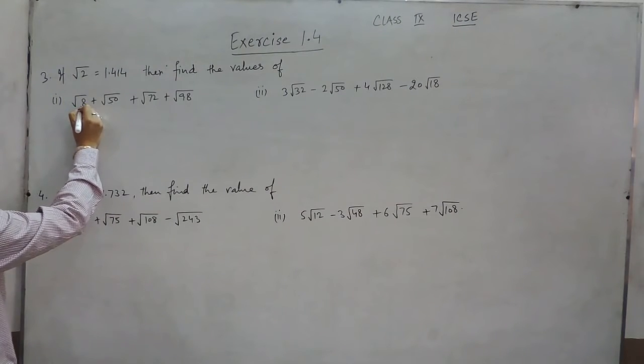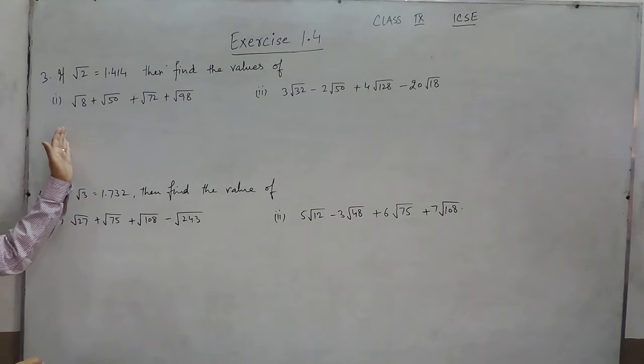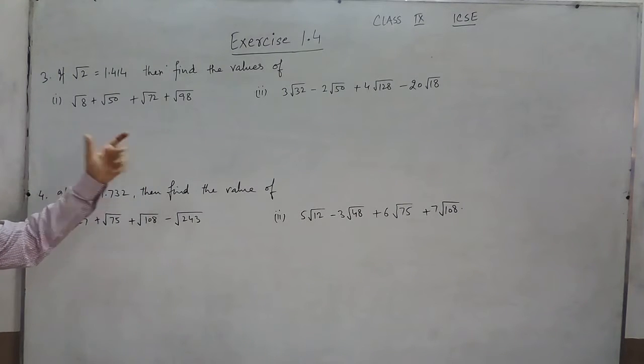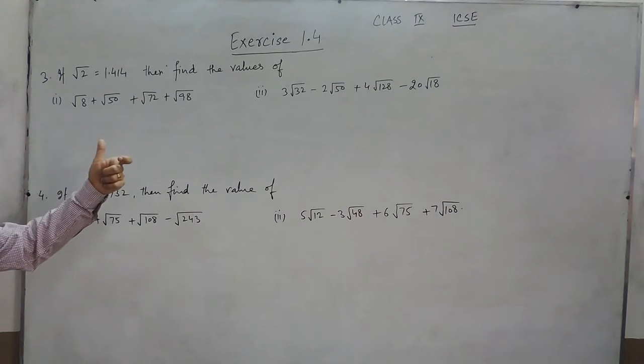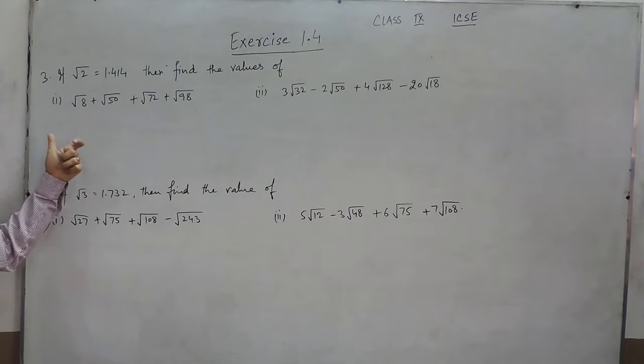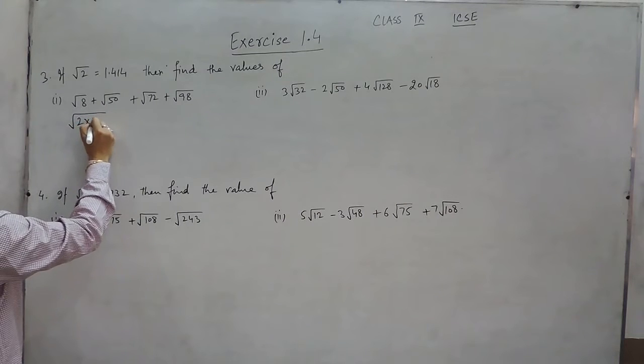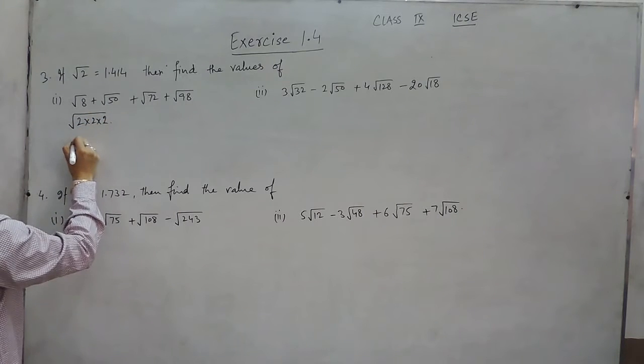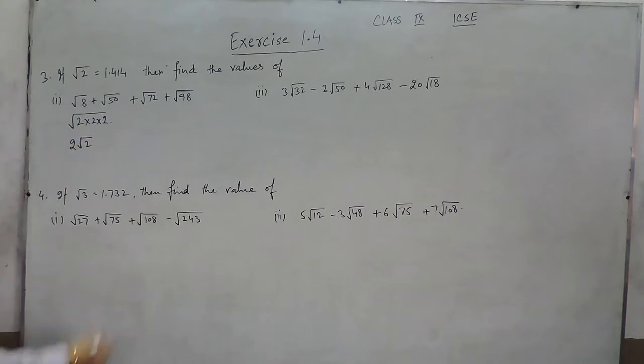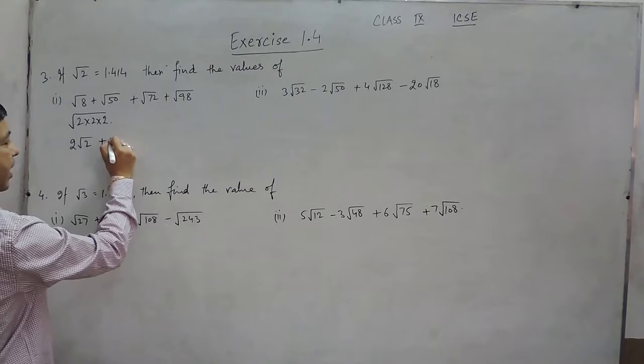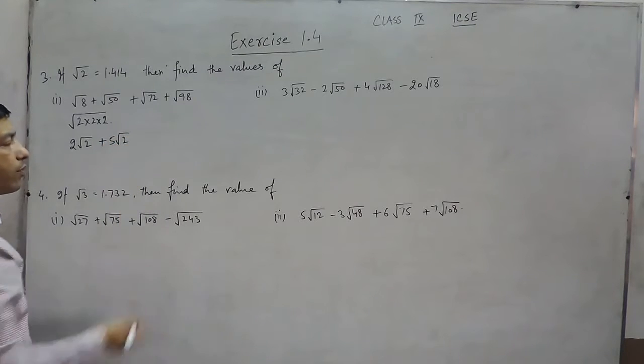Under root 8 can be written as 2 × 2 × 2. If there are two factors common under the root, we can take one thing outside. So it is 2 × 2 × 2, which can be written as 2√2. Same way, √50 is 2 × 5 × 5, so one 5 can be taken out. It is 5√2.